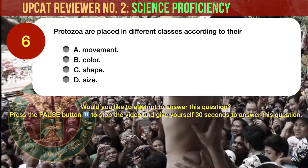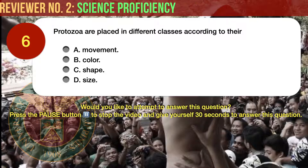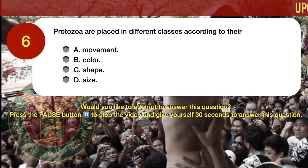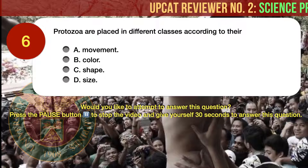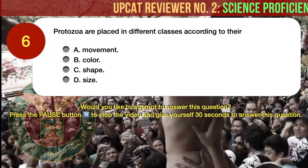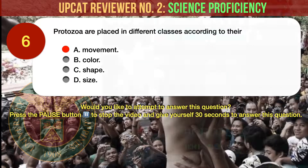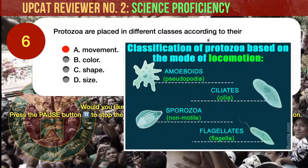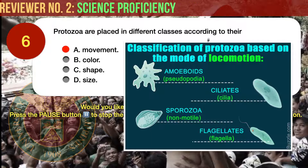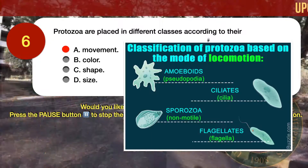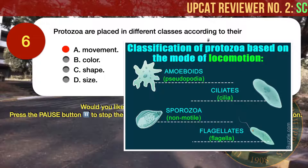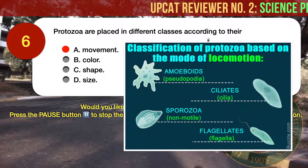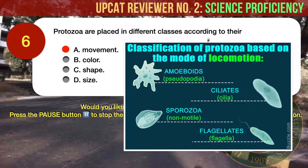Question number 6. Protozoa are placed in different classes according to their A, movement. B, color. C, shape. D, size. The correct answer is A, movement. All protozoal species are assigned to the Kingdom Protista in the Whittaker classification. The protozoa are then placed into various groups primarily on the basis of how they move. The groups are called phyla, singular phylum, by some microbiologists, and classes by others.